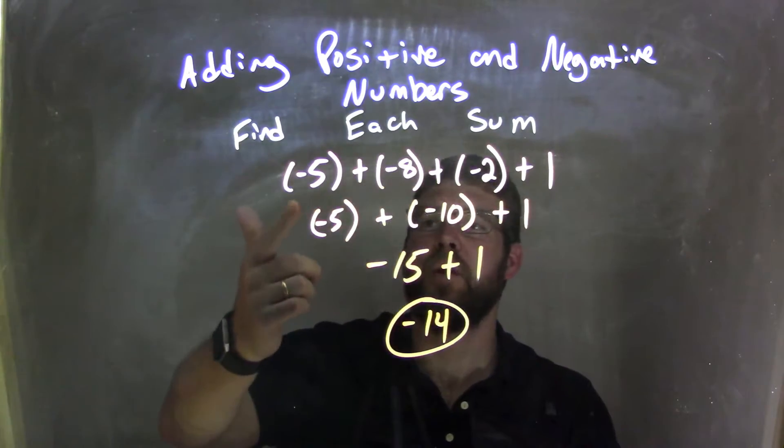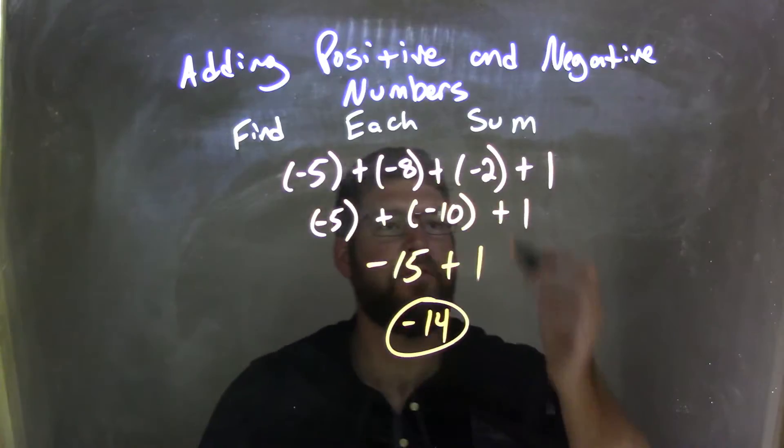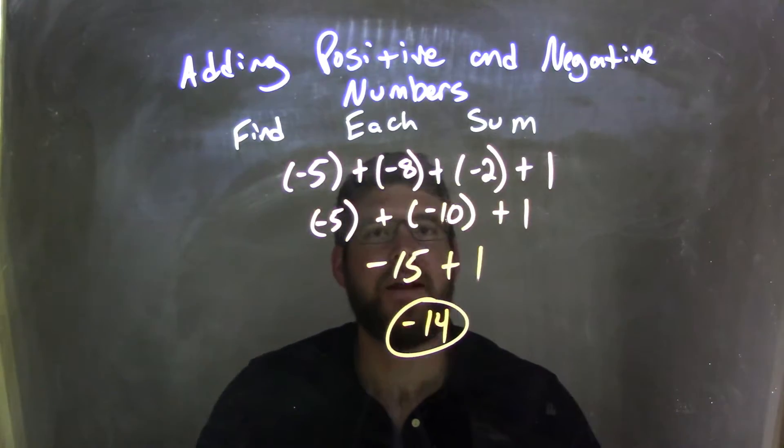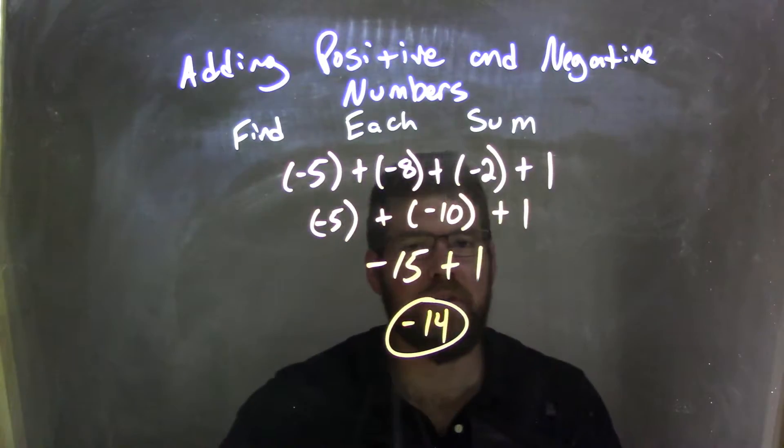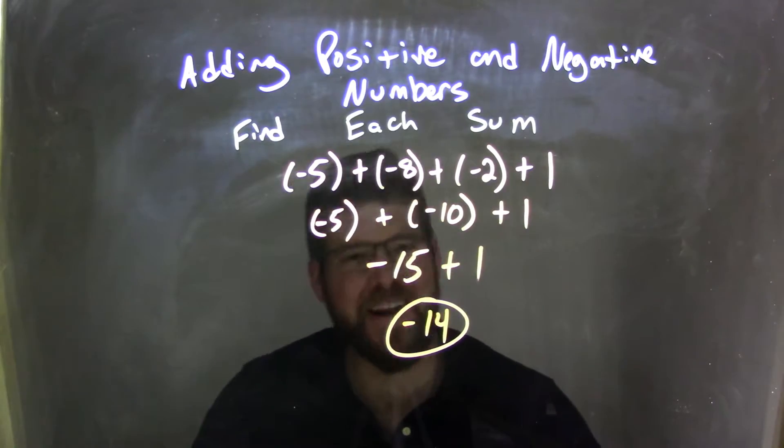So again, let's start from the beginning. We have negative 5 plus negative 8 plus negative 2 plus 1. I dealt with the negative 8 plus negative 2 first because I saw that when I added them together, I get negative 10, and that's an easier number to add to. I'm always trying to find the easy ones first.